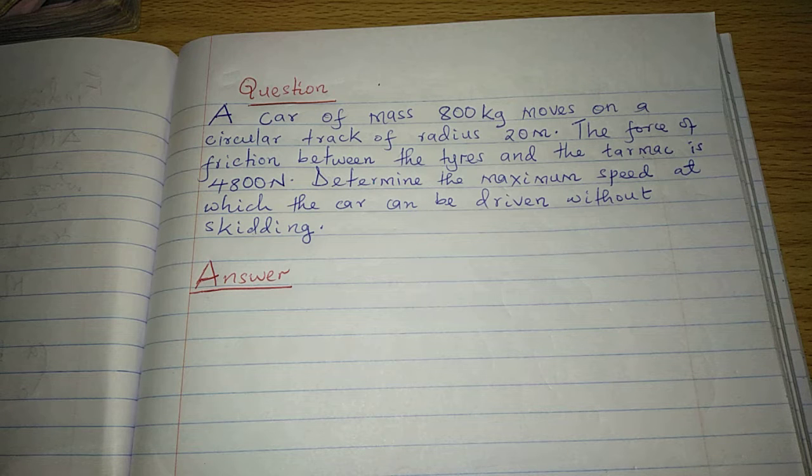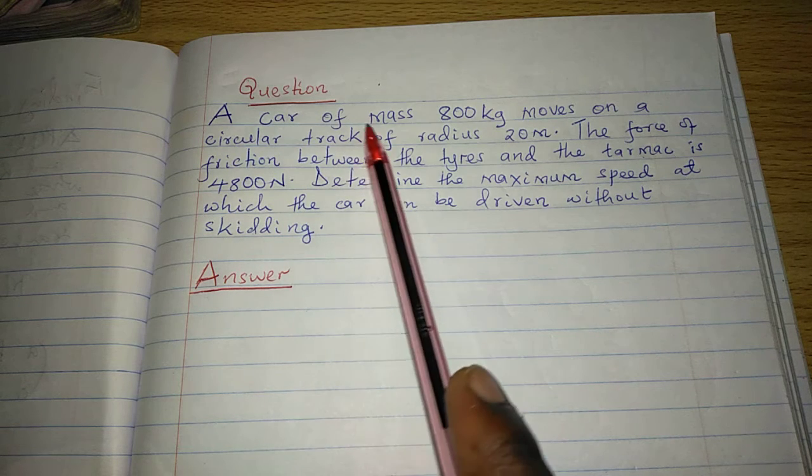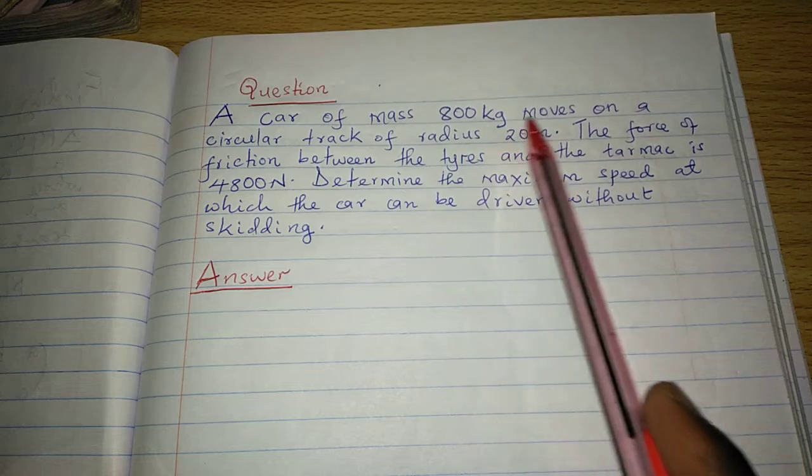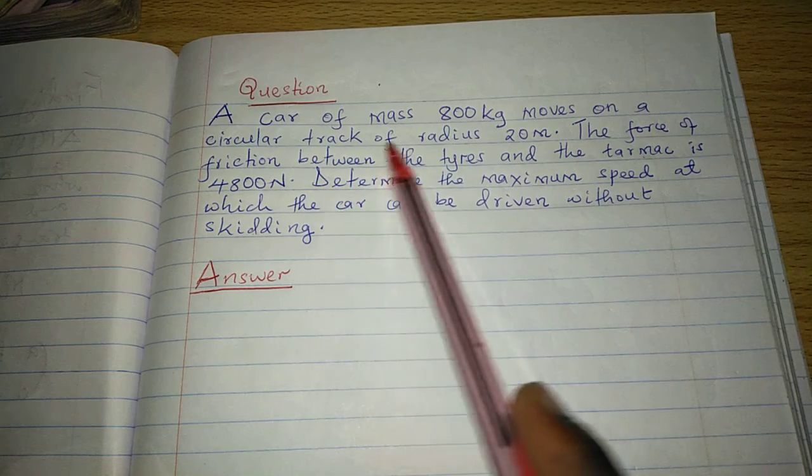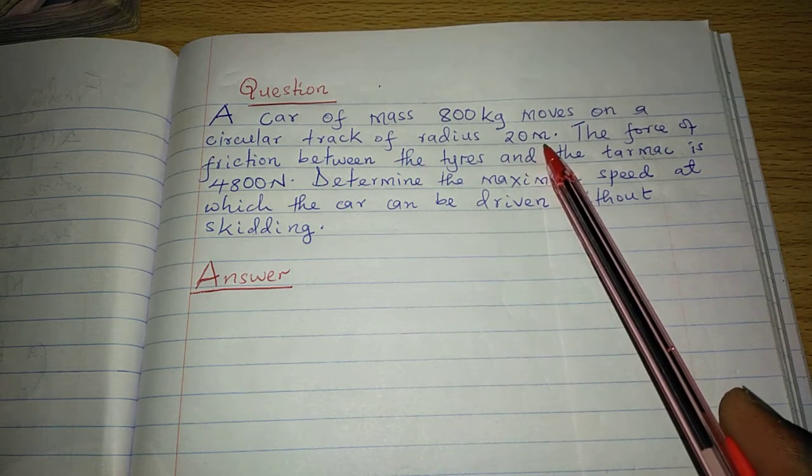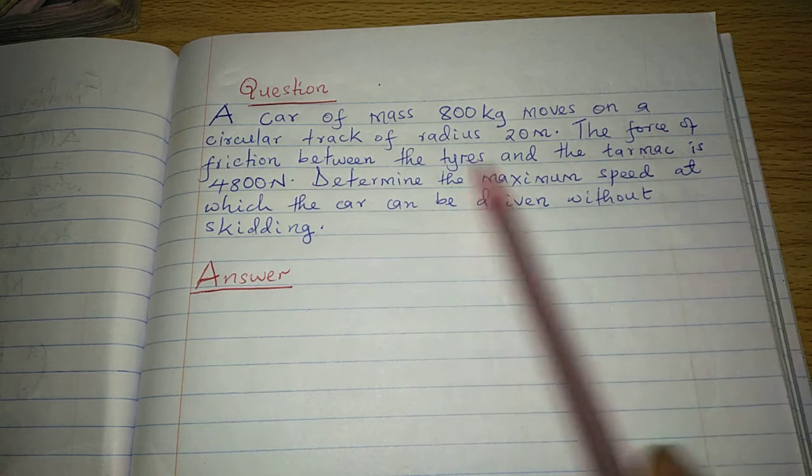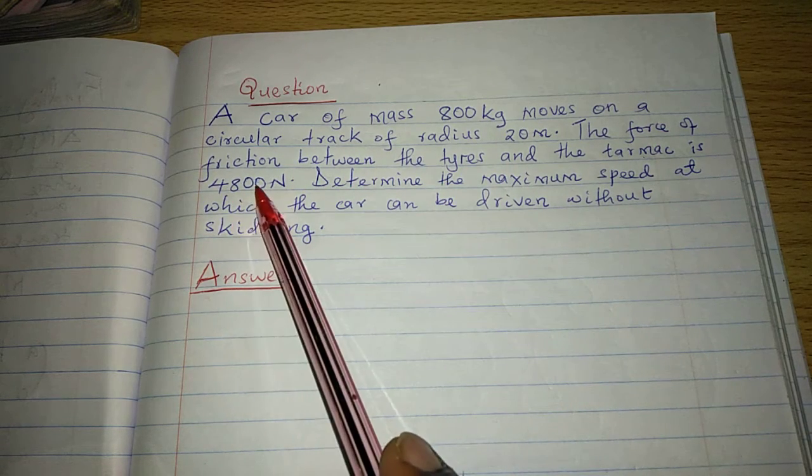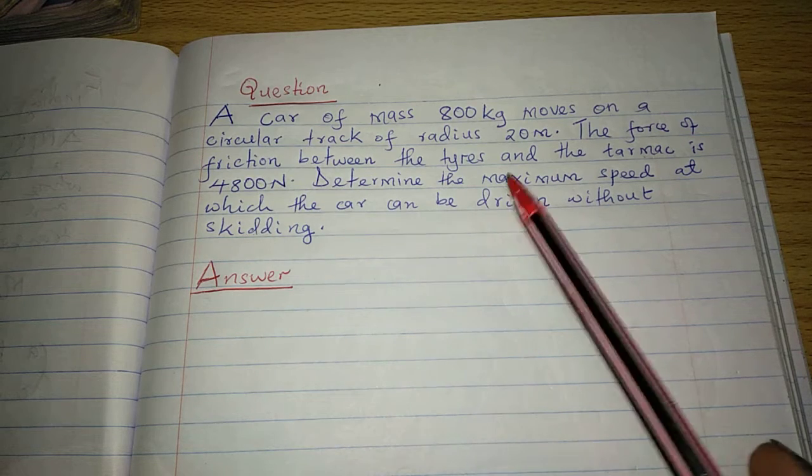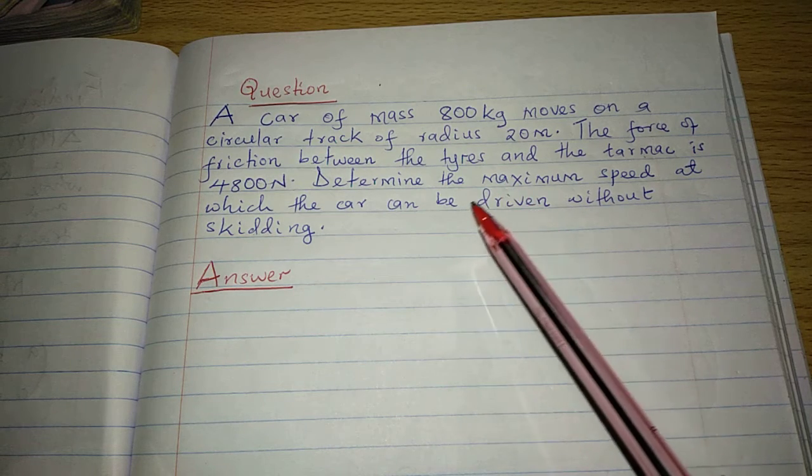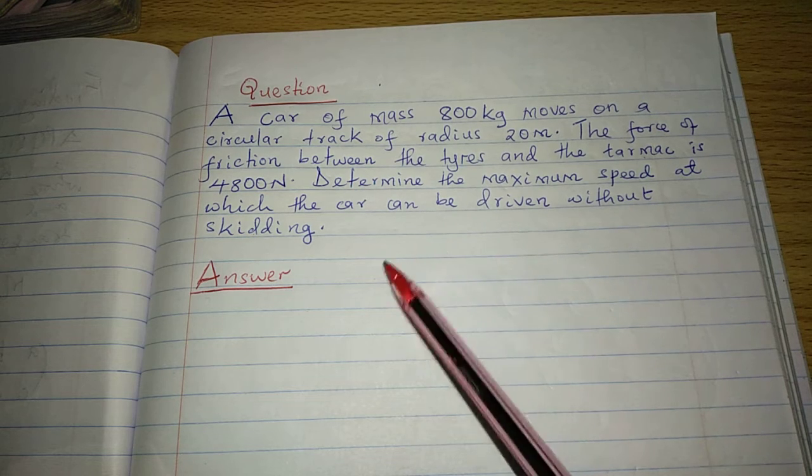We're going to end our question here whereby we are told that a car of mass 800 kilograms moves on a circular track of radius 20 meters. The force of friction between the tires and the tarmac is 4800 newtons. Determine the maximum speed at which the car can be driven without skidding.